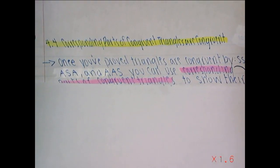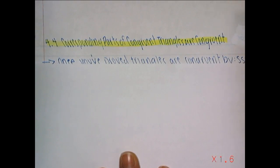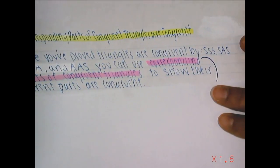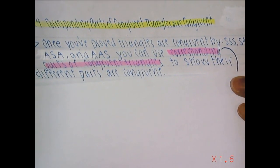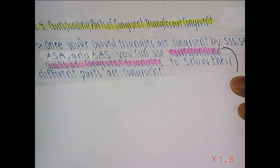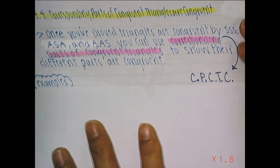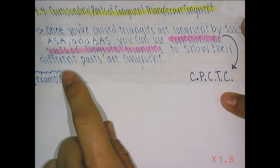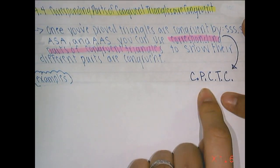Corresponding parts of congruent triangles are congruent. Once you've proved triangles are congruent by side, side, side; side, angle, side; angle, side, angle; and angle, angle, side — you can use corresponding parts of congruent triangles are congruent, or CPCTC, to show that their different parts are congruent. So first you need to prove the triangles are congruent, and then you would use CPCTC.